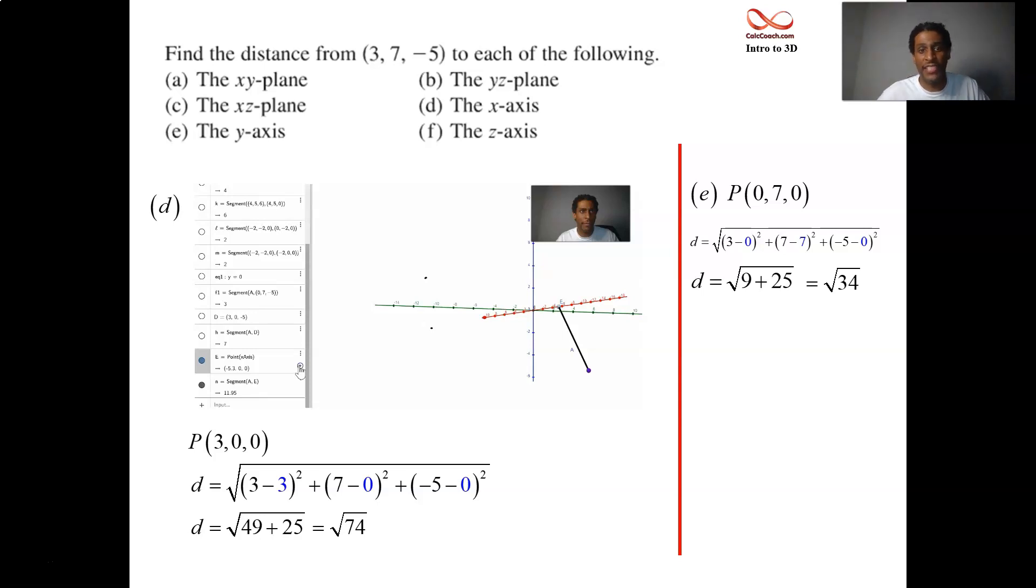And then how far are you away from the z-axis? Well, you're going to let x and y both be 0. (0, 0, -5) is your point. You'll have 3 squared and 7 squared, but then 0 squared. So 9 and 49 added together give you 58, square root of 58.